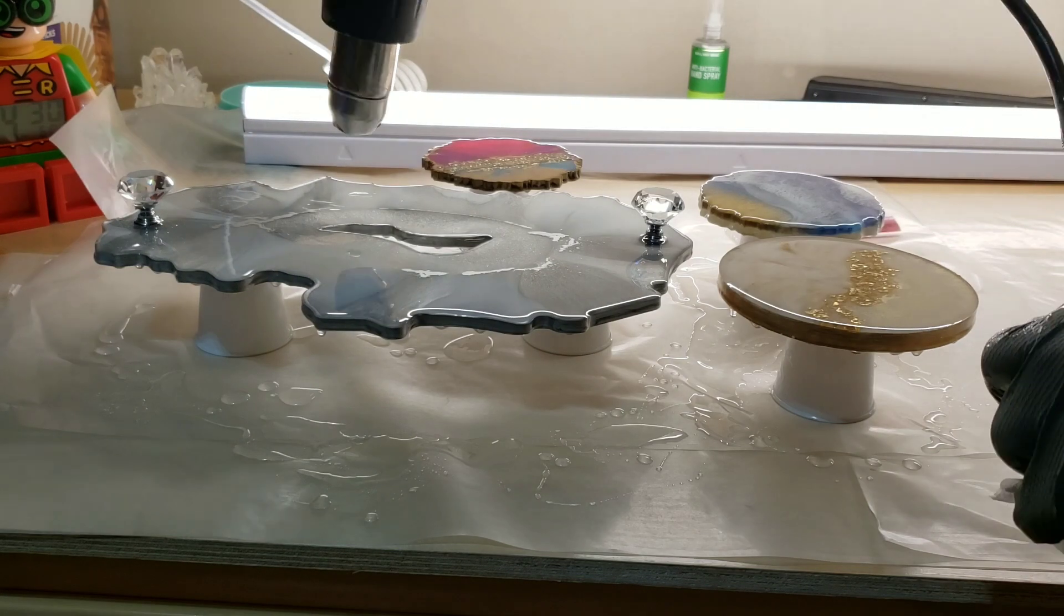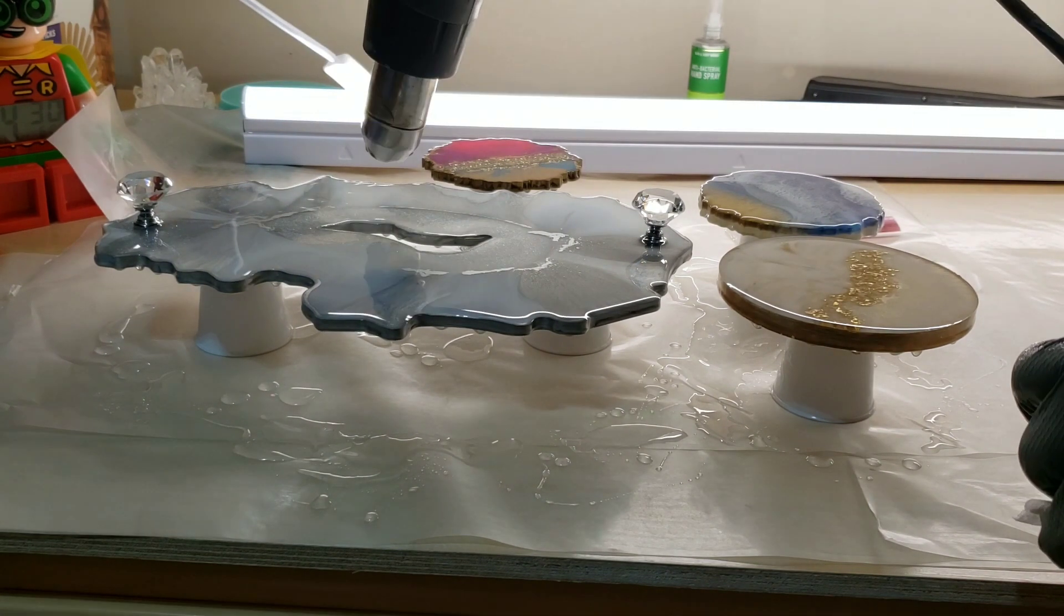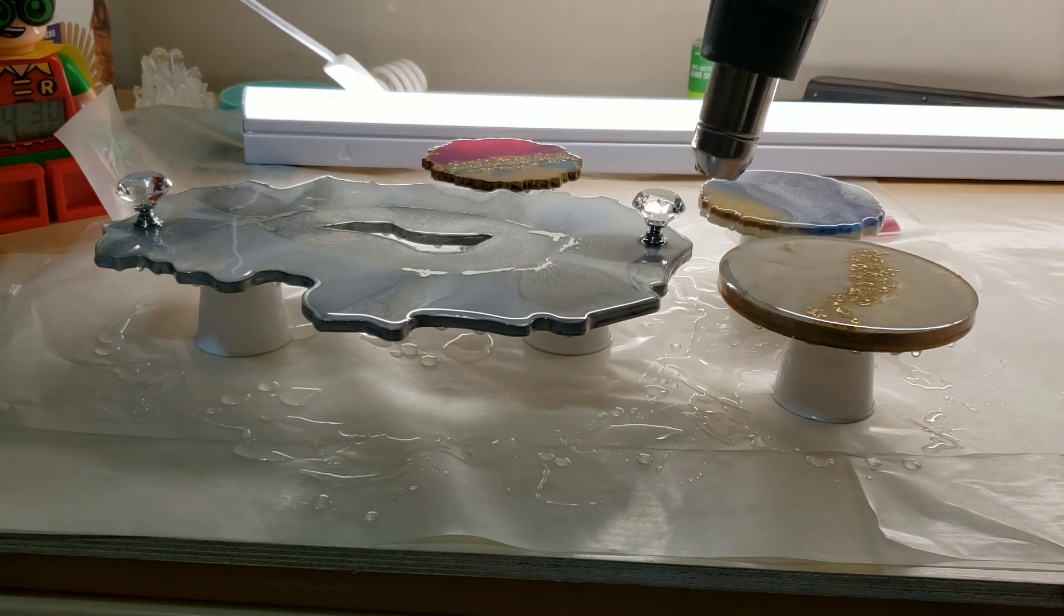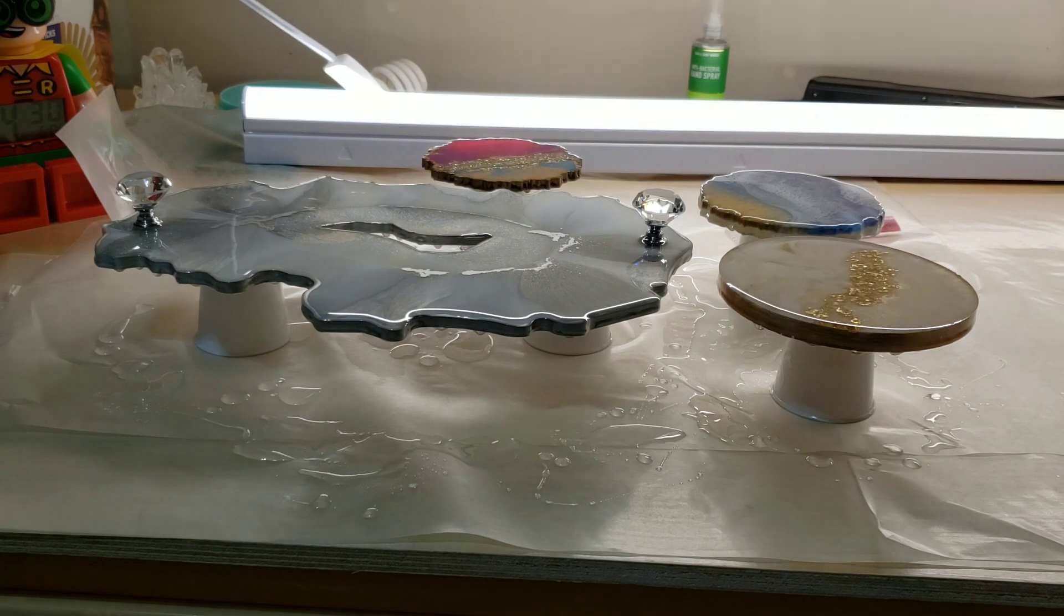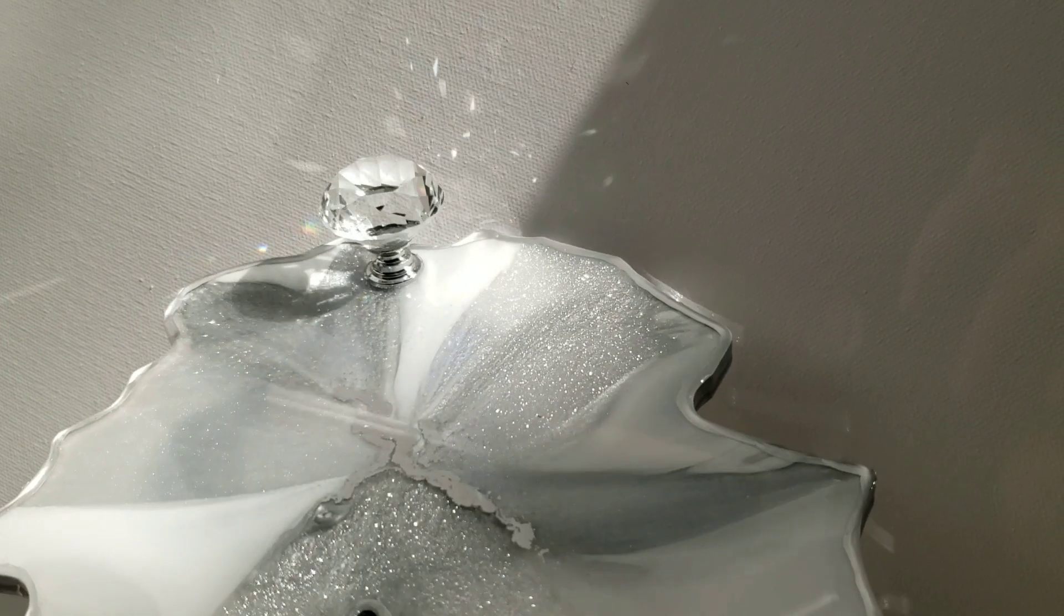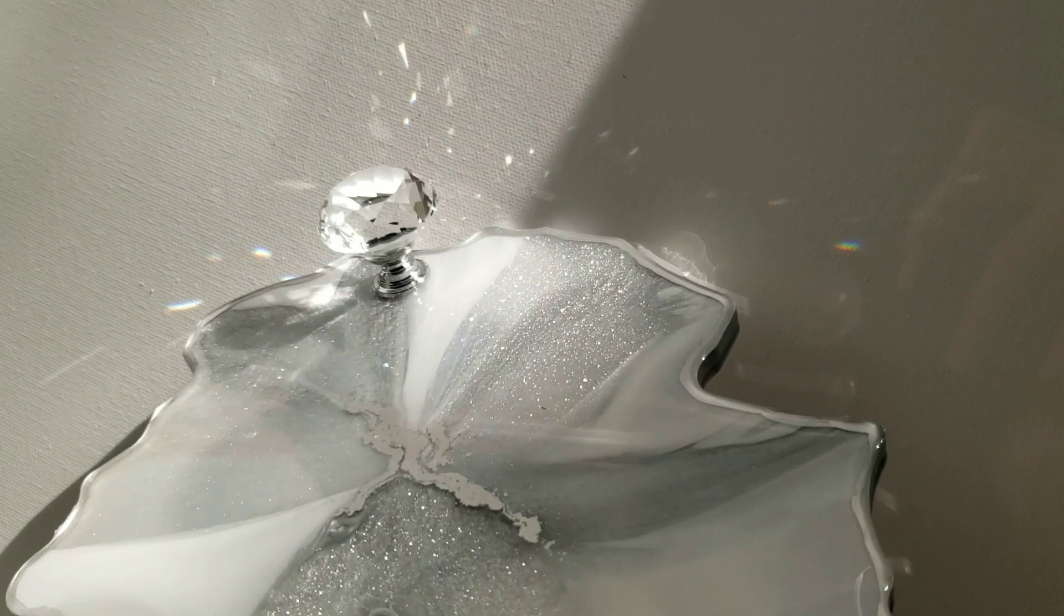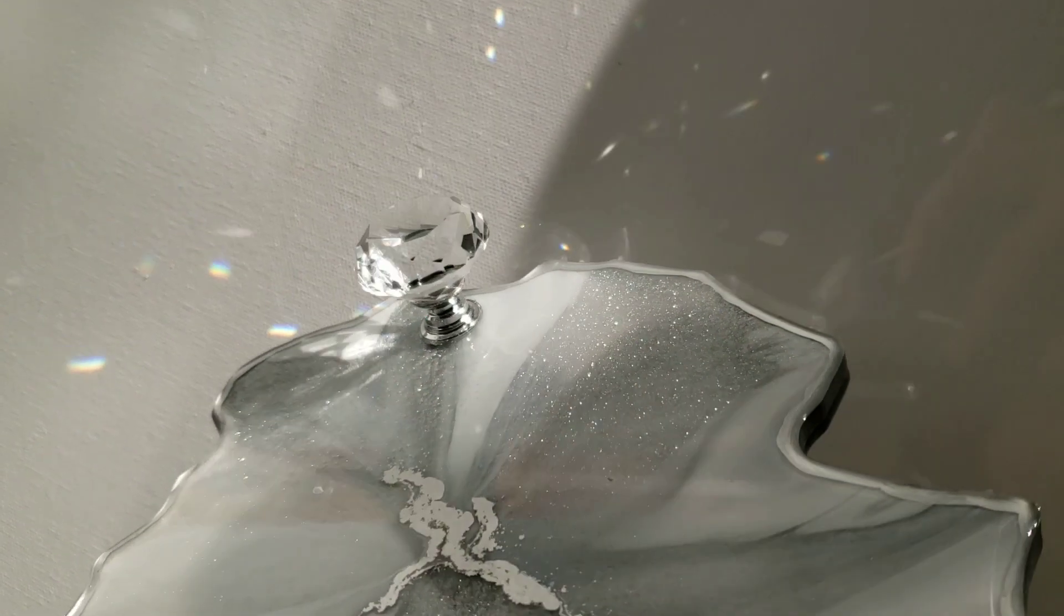And to prevent resin drips I painted the back of this piece with liquid latex. You can use liquid latex or Elmer's glue on your resin pieces. Just paint the back completely. Let it dry and then when your resin is all cured the next day it peels off along with any resin drips. I have a full tutorial showing that. I'll link that down below if you guys want to check it out.